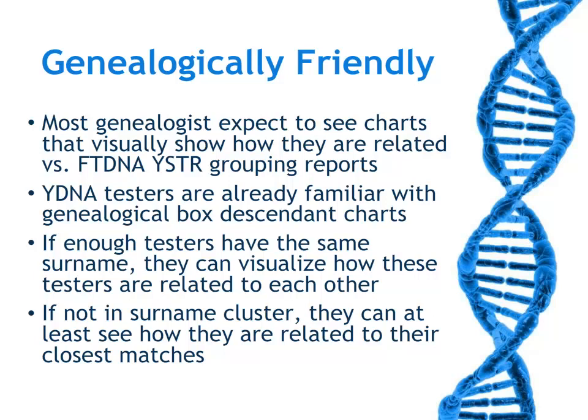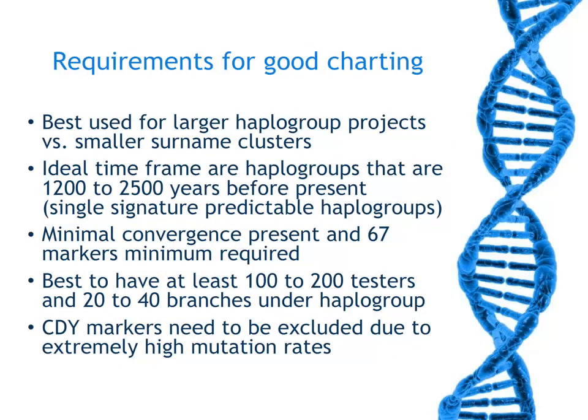If enough testers have the same surname, they can visually see how they're related to each other. But even if they're not part of a larger surname cluster, they can still see at least how they're related to their closest matches. For good charting, it's best used for larger haplogroup projects versus smaller surname clusters.